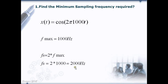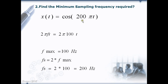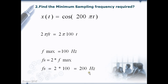Two times 1000 is equal to 2000 Hz. The minimum sampling frequency, which is also called the Nyquist frequency, required to sample this analog signal is 2 kHz. In the next example, we also have to find the minimum sampling frequency required. We have to be careful here that 200πt is not in standard form. The standard form is 2πft, so equating gives f = 100 Hz, and therefore f_s = 200 Hz.